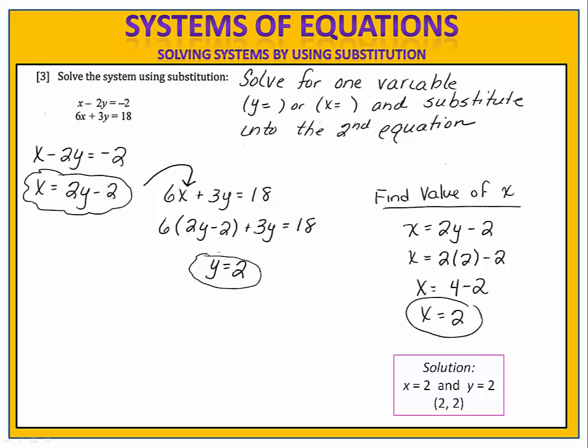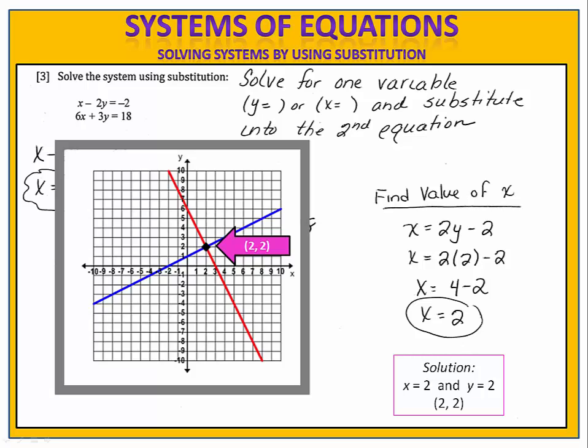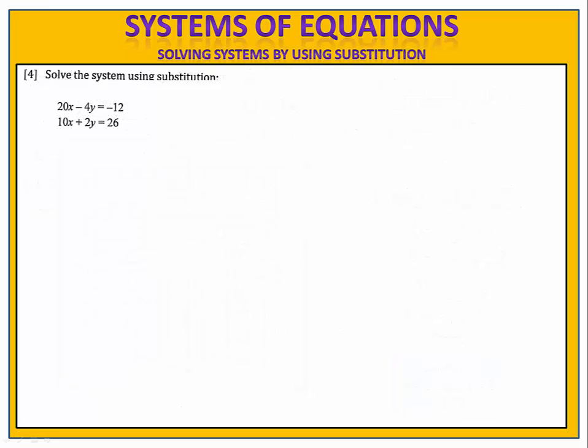This is the same equation that we looked at a couple of moments ago when we did the graph. When we found the graphs, we saw that the intersection was at the point (2, 2). So we've now seen two different ways to solve the same system. Exercise 4 is for you to try. Can you use substitution? Solve for one of the variables and then substitute into the other equation. Please pause the video here and complete the exercise.